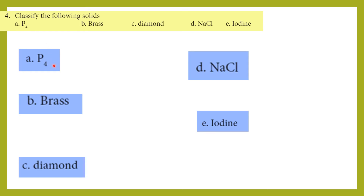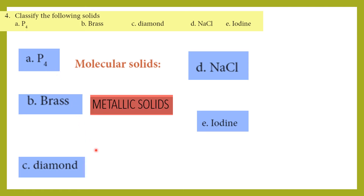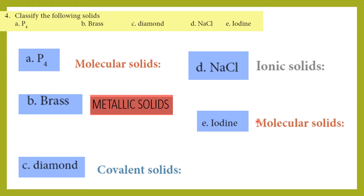Phosphorus (P4) is a molecular solid. Metals are metallic solids. Diamond has strong covalent bonds, so it is a covalent solid. Sodium chloride (Na⁺, Cl⁻) is an ionic solid. Iodine (I₂) is also a molecular solid. This is the classification model.